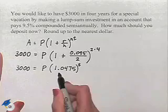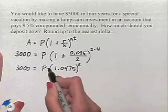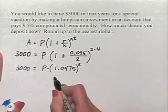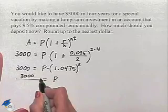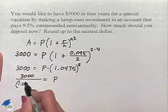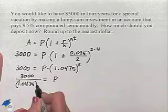To solve for P, we're going to divide both sides of the equation by this amount. So we're going to have P equals 3,000 divided by 1.0475 to the 8th power.